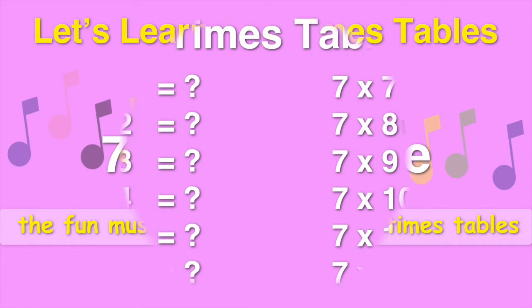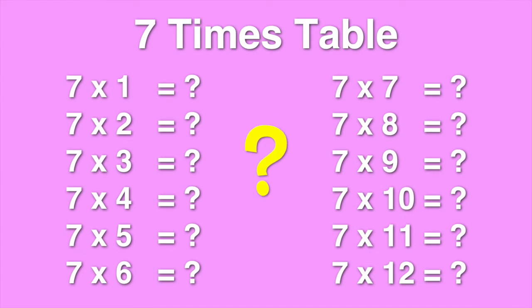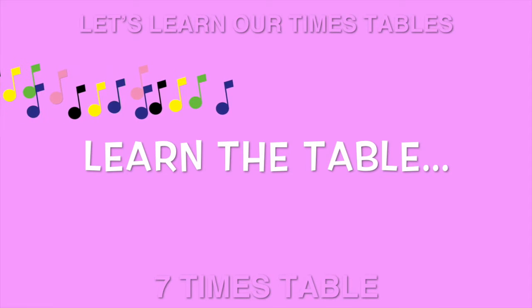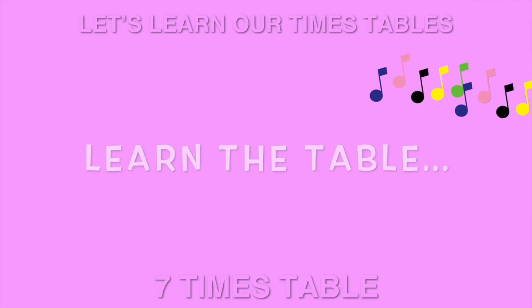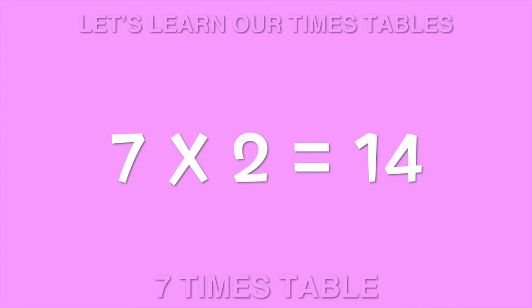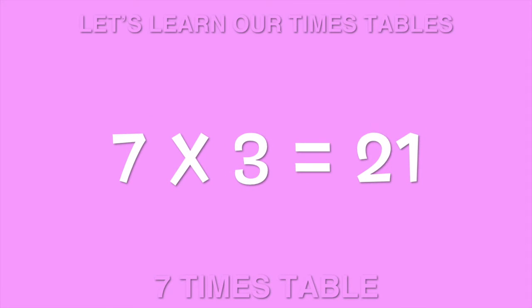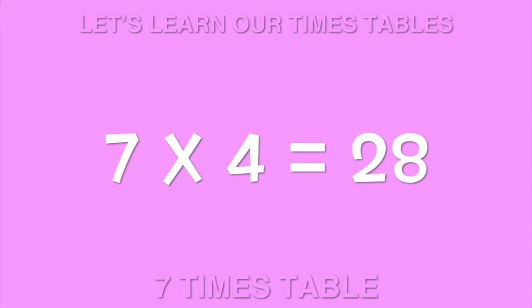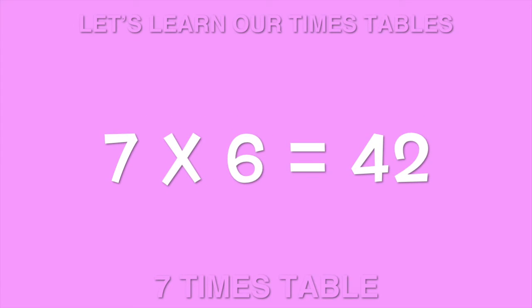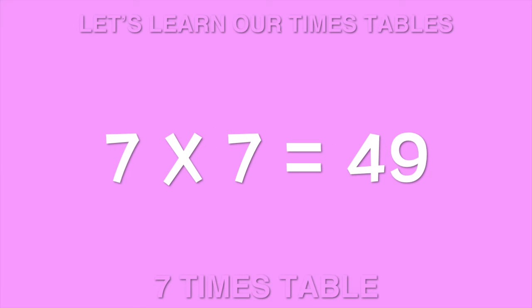So learning our times tables will be fun, so learning our times tables one by one. 7 times 2 is 14. 7 times 3 is 21. 7 times 4 is 28. 7 times 5 is 35. 7 times 6 is 42. 7 times 7 is 49.